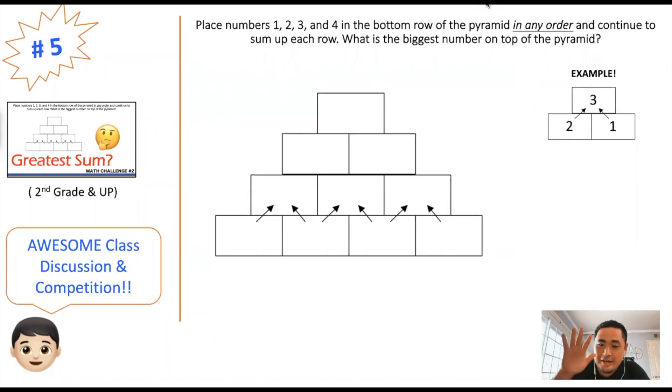So ranking in at number five is this awesome pyramid problem where you are putting the numbers in on the bottom in any particular order that you want and seeing how you could get the biggest number on the top.